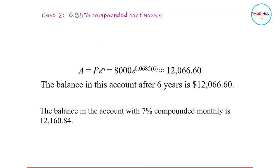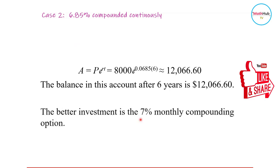Comparing the amount you have after six years in different scenarios, you can conclude that the better investment is the 7% monthly compounding option.